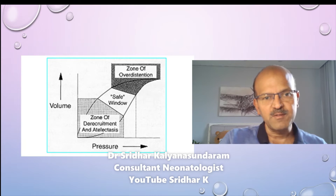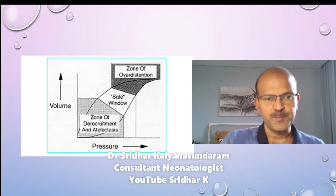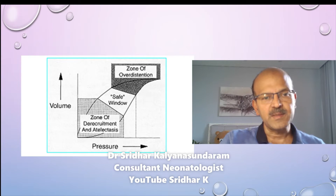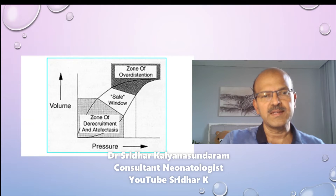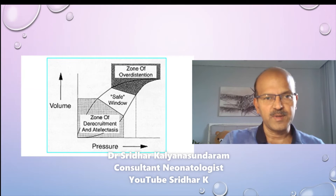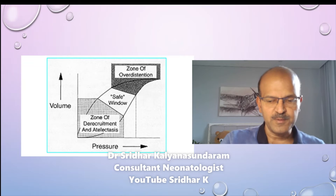Irrespective of whether we use non-invasive or invasive ventilation, the aim is to stay in the safe window. Looking at a pressure-volume curve — volume on the y-axis and pressure on the x-axis — as the lung gets stiffer, the curve becomes flatter, requiring more pressure to achieve a given volume. Initially, pressure is applied to open the lungs; below the opening pressure is the zone of de-recruitment and atelectasis. Once pressure is increased beyond a certain level, you reach the zone of over-distension — or beaking — where further pressure increase will not change volume, wasting pressure and causing barotrauma. The goal is to operate within the safe window, and you can reduce pressure while maintaining volume — this is the principle of hysteresis.